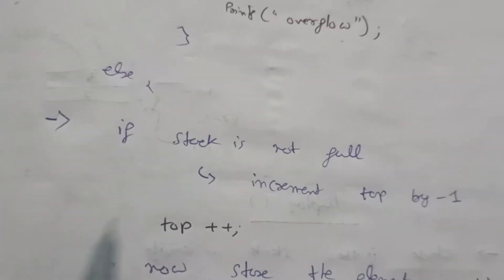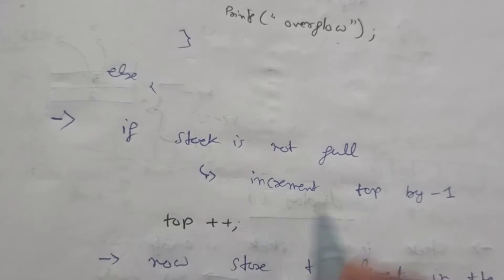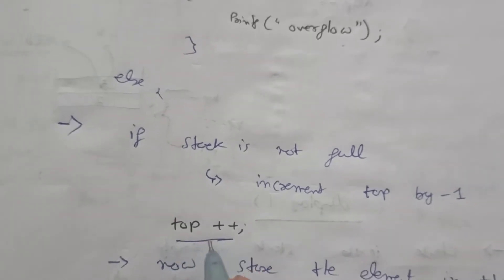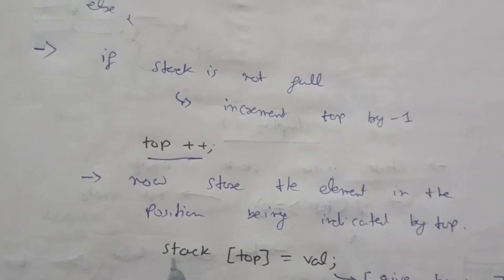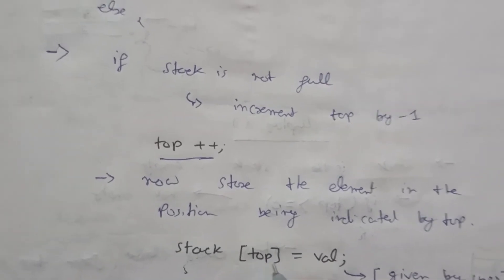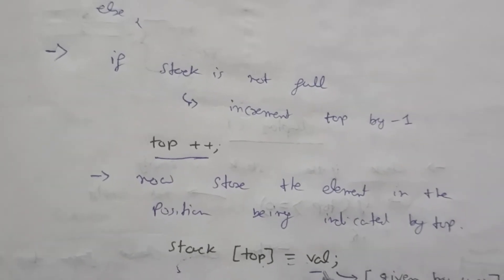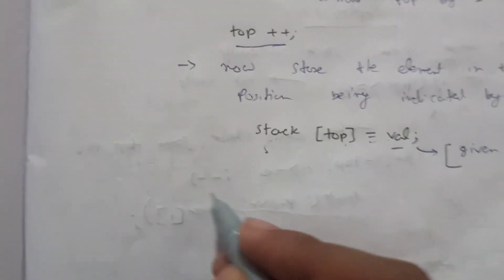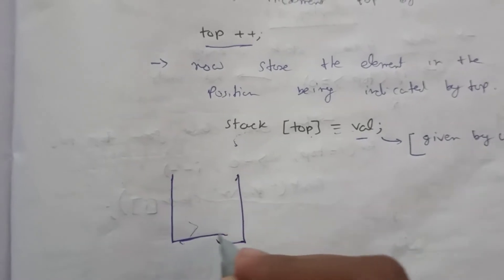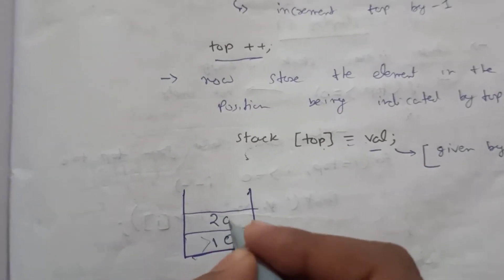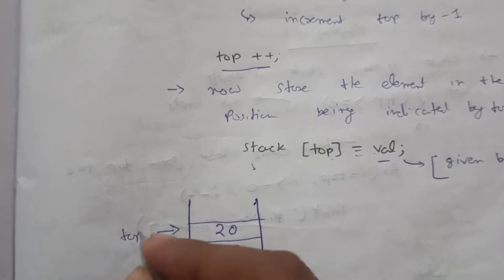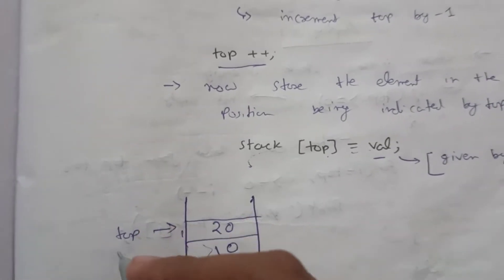If the stack is not full, in the else part we increment top by one — top plus plus — and store the element at the position indicated by top: stack[top] is assigned the value given by the user. Suppose the stack already has two values, 10 and 20, and the top is at index 1.